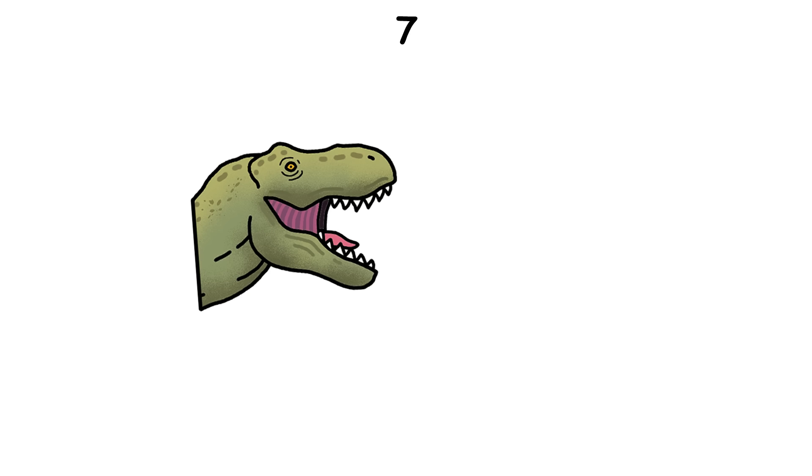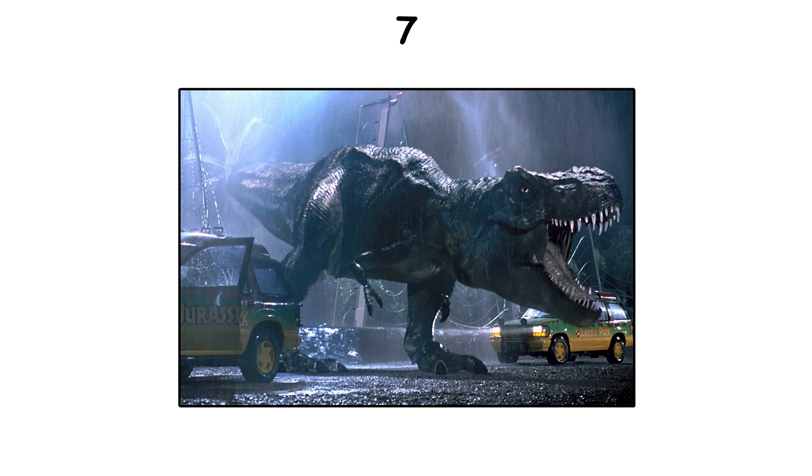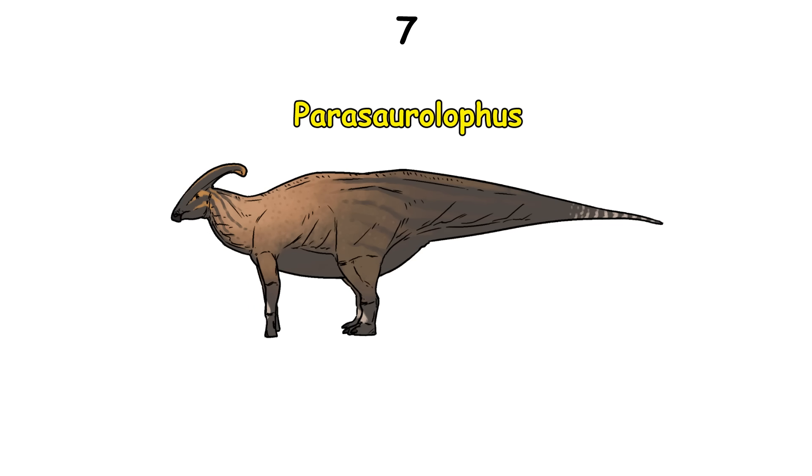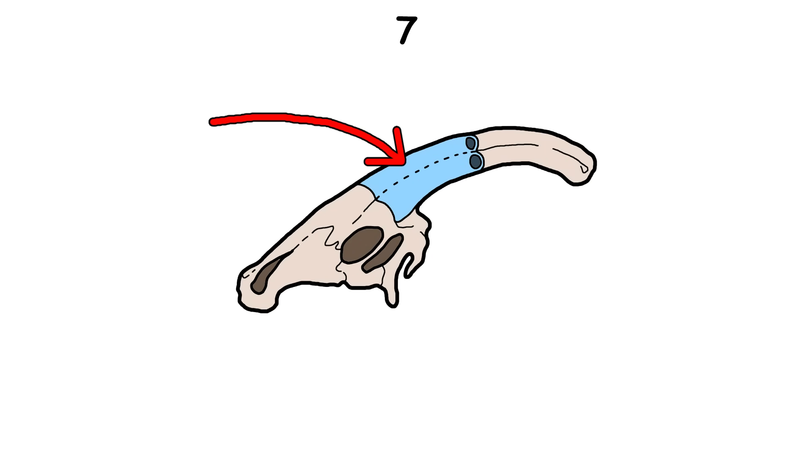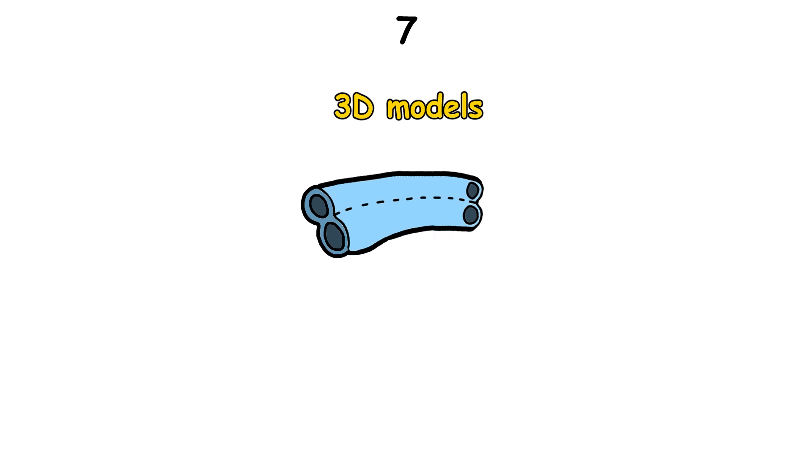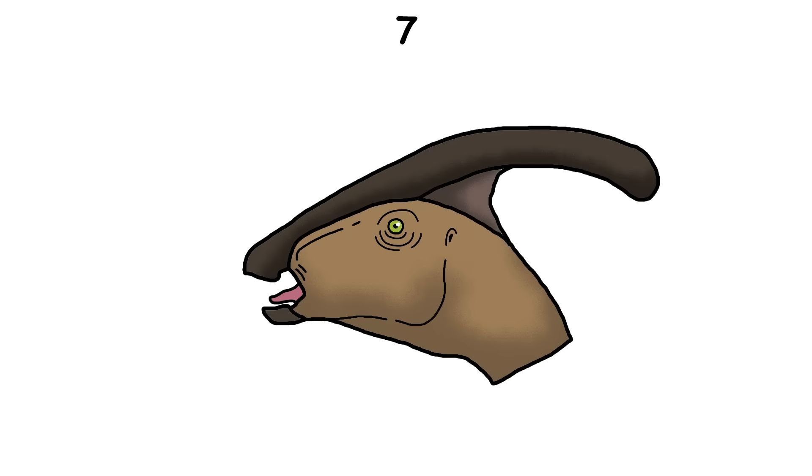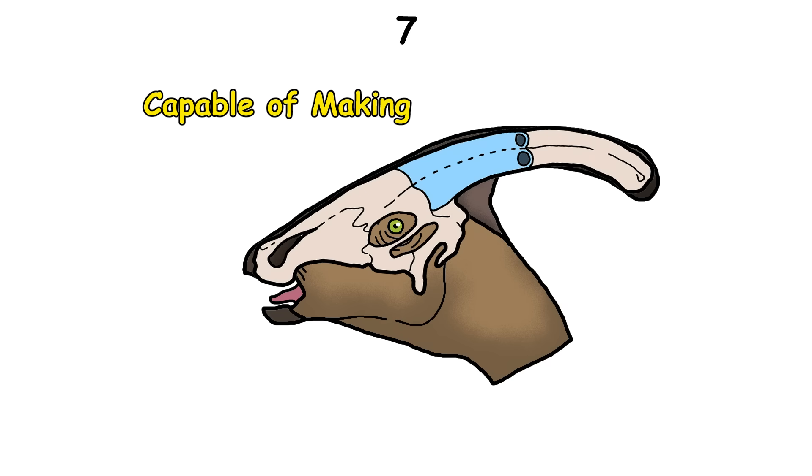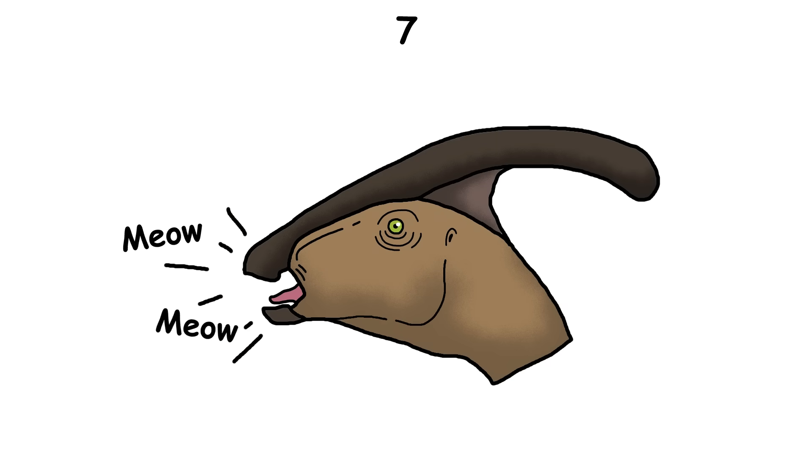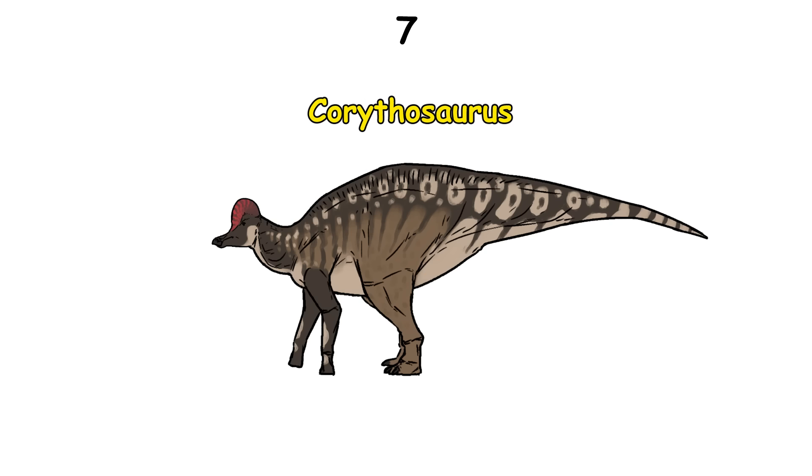We don't know what dinosaurs sounded like, and the sounds in movies or online videos are made up. The only exception is Parasaurolophus. It had a long, hollow crest on its head, and scientists used 3D models to simulate airflow through it. The result sounded like a deep call, similar to an air horn. But even with him, we only have an idea of what sounds it was capable of making, as there's no way to know for certain. There was also a similar study on Corythosaurus.